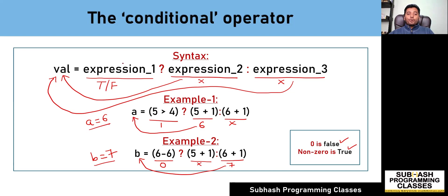Hope you now understood how the conditional operator works. As a quick recap: expression one must result in either a true or false condition. If expression one results in a true condition, then expression two will be evaluated and its result will get assigned to the variable val. If expression one results in a false condition, then expression two will get ignored and expression three will get evaluated, and the result of expression three will get stored into val.